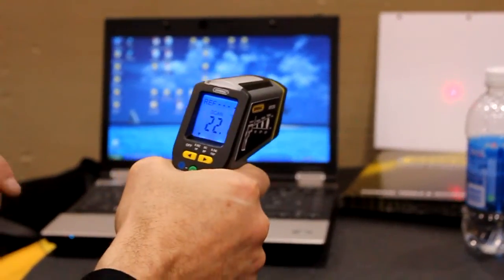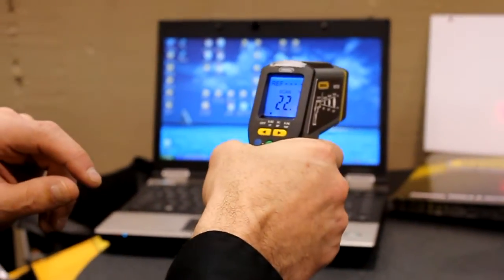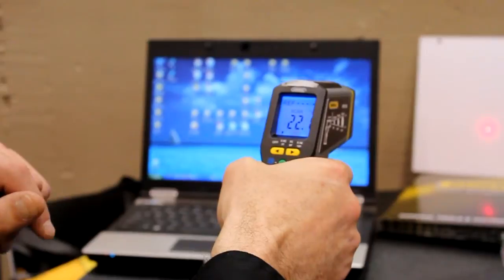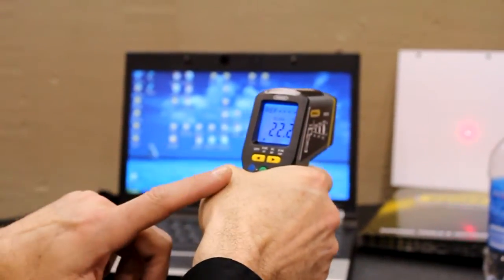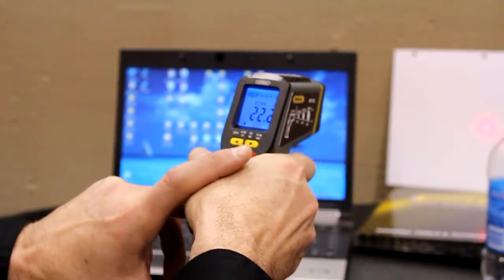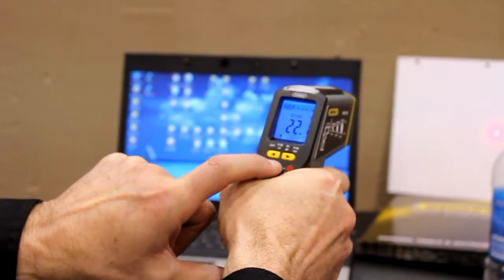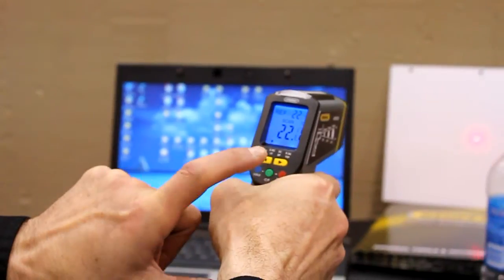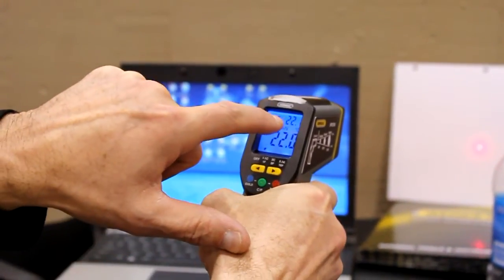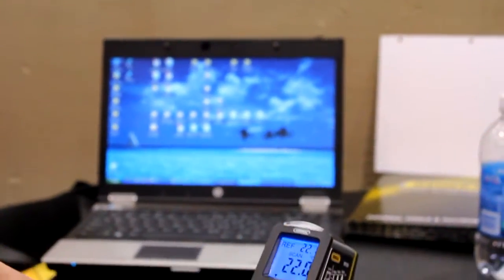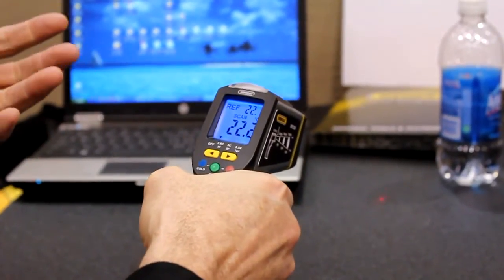Now I'm going to proceed to demonstrate how the alarm set points work. The user simply presses the button, the green button here in the center. It acquires the ambient temperature. The ambient temperature is shown in the upper corner. That temperature represents the normal temperature that you are measuring.